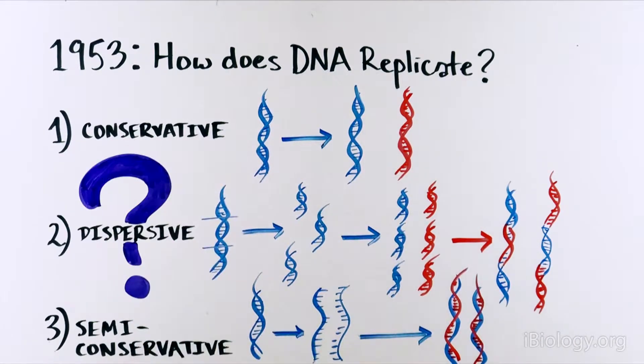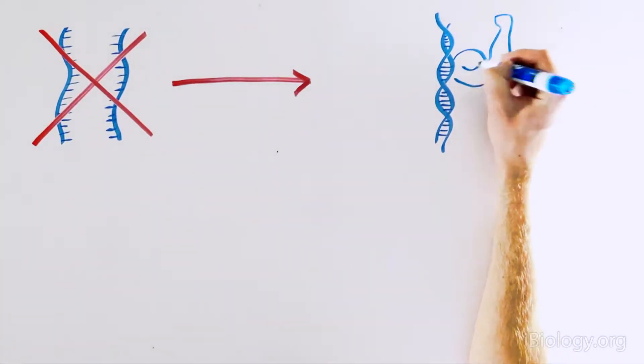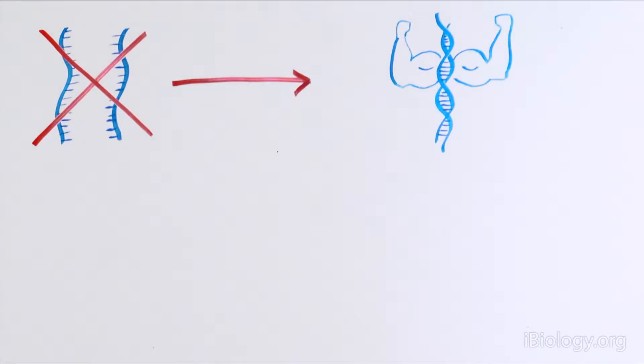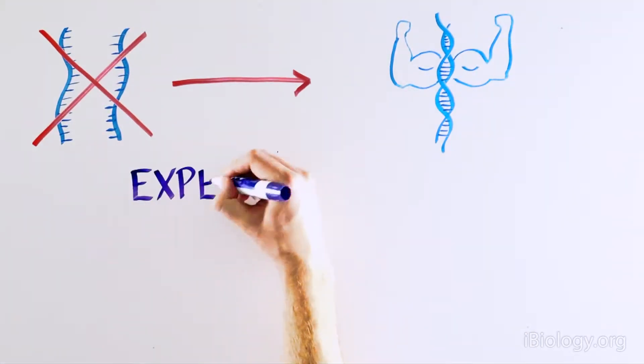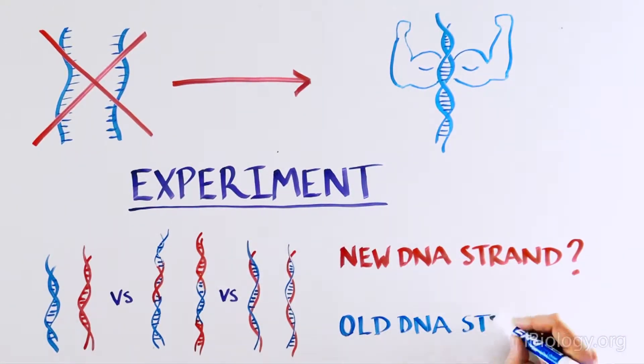But which one was it? Many scientists did not believe that two DNA strands could separate because of how strong a DNA molecule is, so they were skeptical of the semi-conservative model. The only way to solve this was to create an experiment to tell the new DNA strand from the old one.